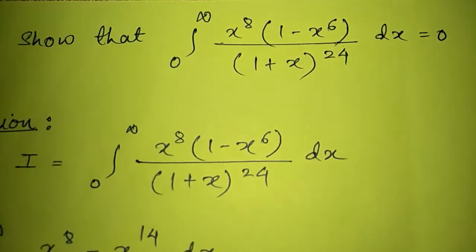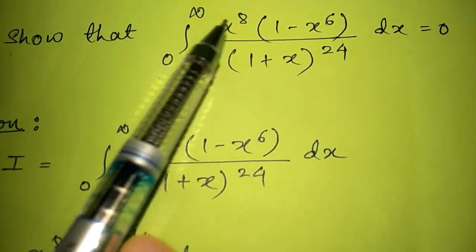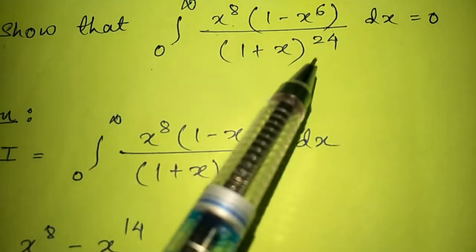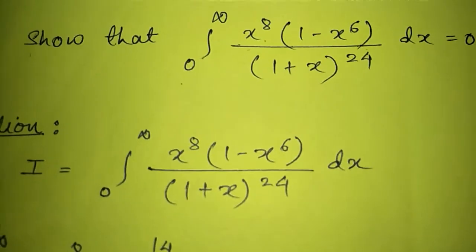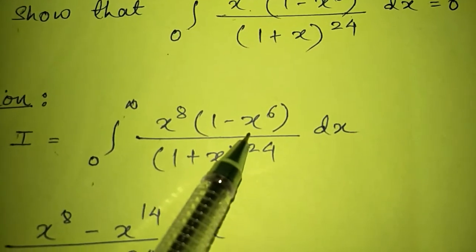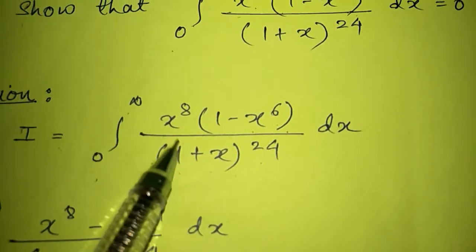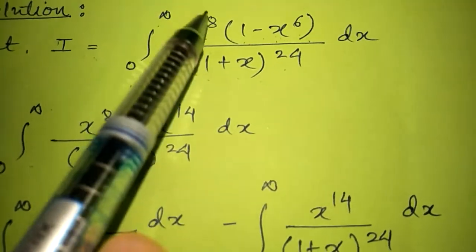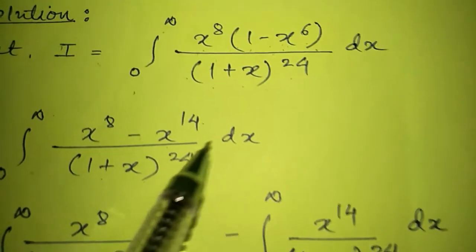The next problem asks us to show that integral from 0 to infinity of x raised to 8 into 1 minus x raised to 6, the whole upon 1 plus x bracket raised to 24, dx is equal to 0. We set I equal to that integral, and expand the bracket: integral from 0 to infinity of x raised to 8 minus x raised to 14, upon 1 plus x bracket raised to 24 dx.